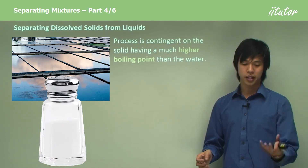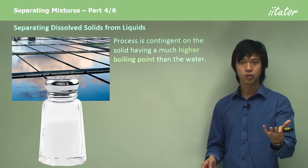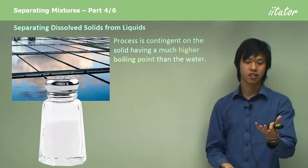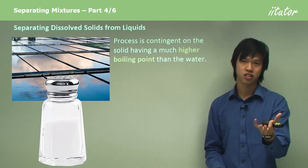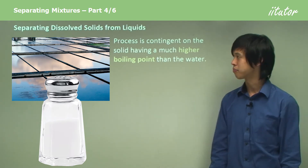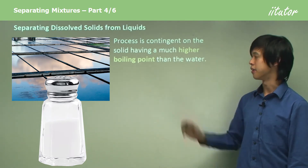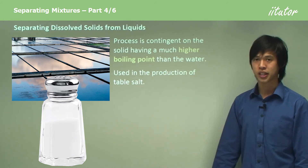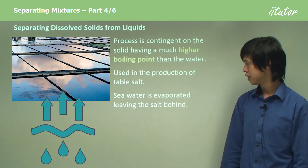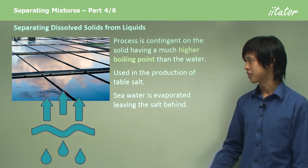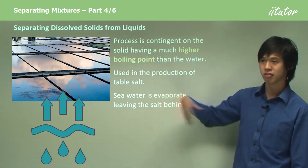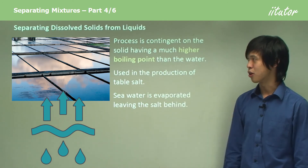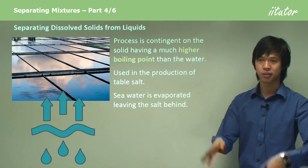Because we can't boil the solid, we can boil the water and it will go away, and what's left over is just solid salt. That's what we're trying to do here. It's used, as mentioned, in the production of table salt — the seawater is evaporated leaving the salt behind. Here's a typical salt factory: you just leave seawater out in open tanks and let the water evaporate.